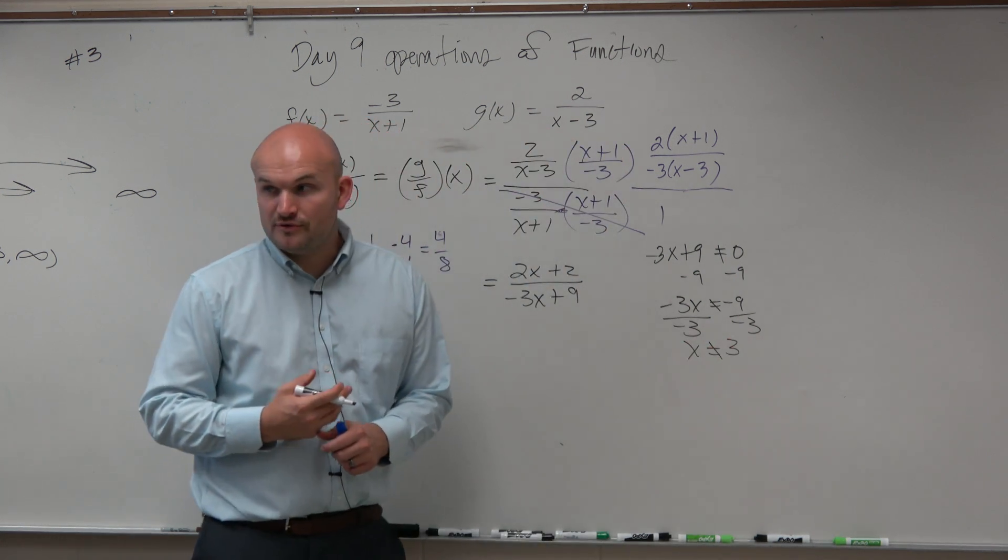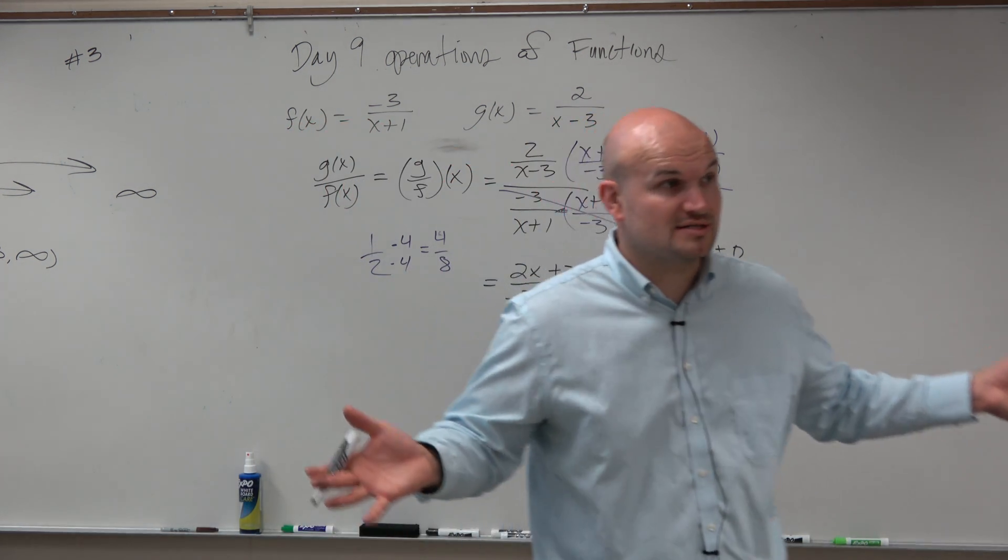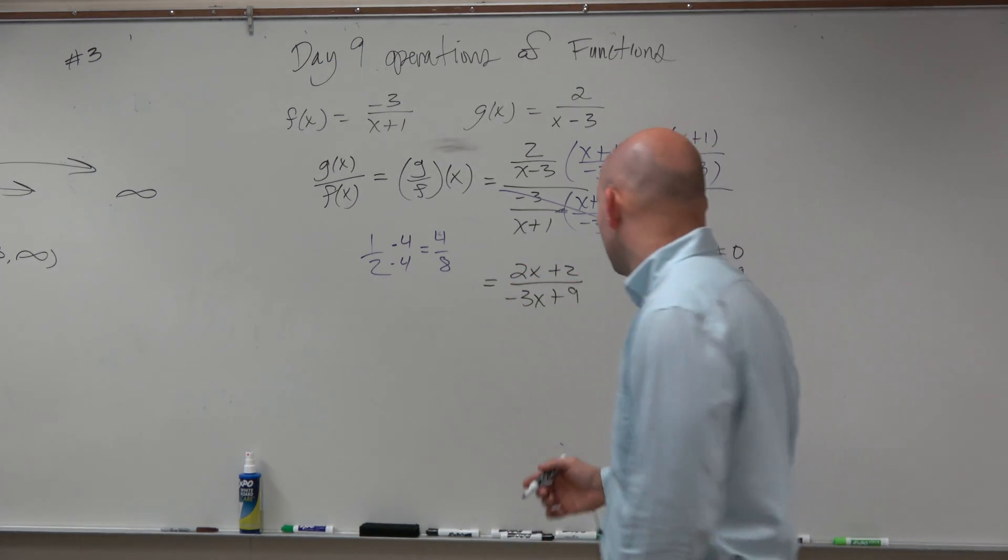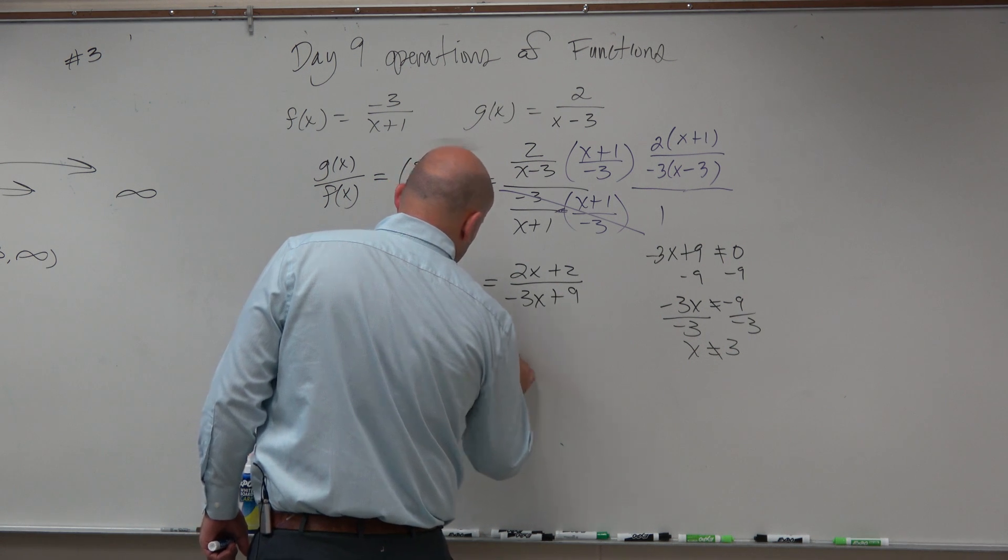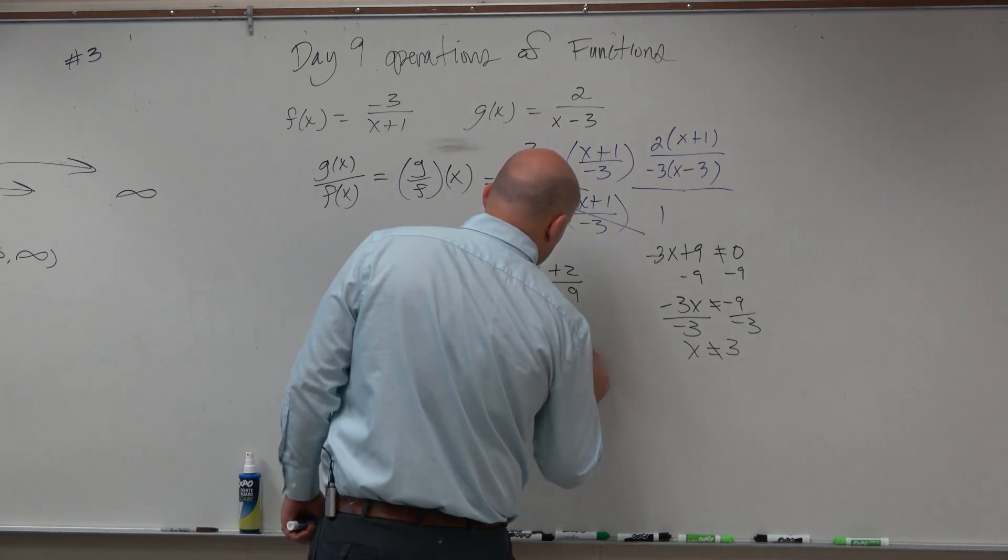So x cannot equal 3. So every other number works, except for 3. So therefore, my domain is going to be negative infinity to 3, union 3 to infinity.